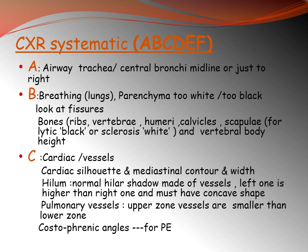Let's be systematic when we look at the x-ray. We use the ABCDF approach. A is for airway: the trachea, which must be central, and the bronchi, which must be at the midline or just to the right side. B is for breathing: assess the lung parenchyma — whether it is too white or too black — and look for the fissures. Also assess the bones: ribs, vertebrae, clavicles, scapula. Look for lytic or sclerotic lesions — lytic will appear black and sclerotic white — and check vertebral body height.